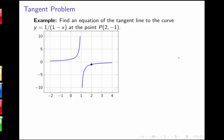The first problem we're going to focus on is the tangent line problem. In this example we have a curve y equals 1 over 1 minus x, and we're interested in finding the equation of the tangent line to this curve at the point p, where p is the point 2 comma negative 1. I want to find the slope of my curve at point p, but I don't know how to find slope through exactly one point — we do know how to find slope through two points.